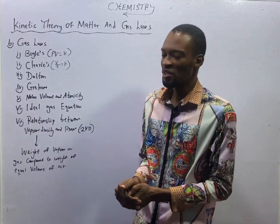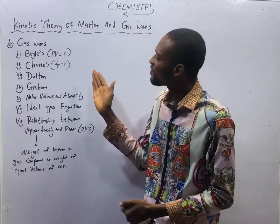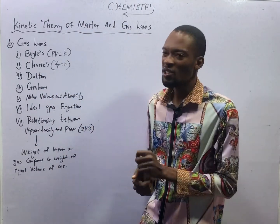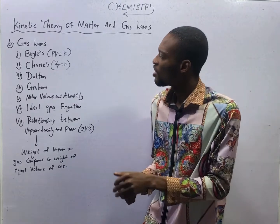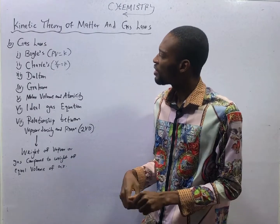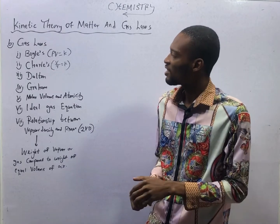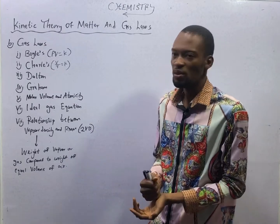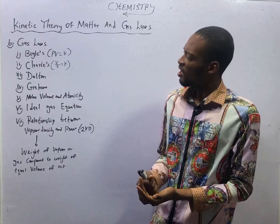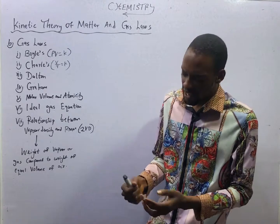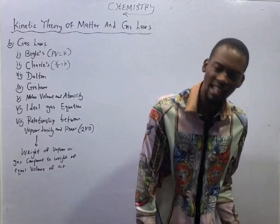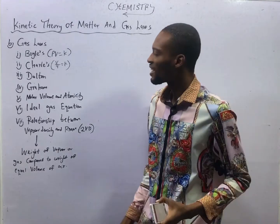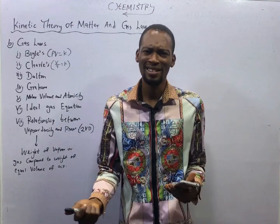From Boyle's Law, we saw that PV is constant. From Charles' Law, we saw that V over T equals constant. Today, we shall be solving questions under Boyle's and Charles' Laws.